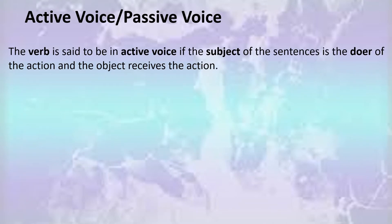Let's first have a look at the proper definition of active voice and passive voice along with their examples. The verb is said to be in active voice if the subject of the sentence is the doer of the action and the object receives the action. In simple words, if the subject is performing the action and the object is receiving the action, the verb is in its active voice form.